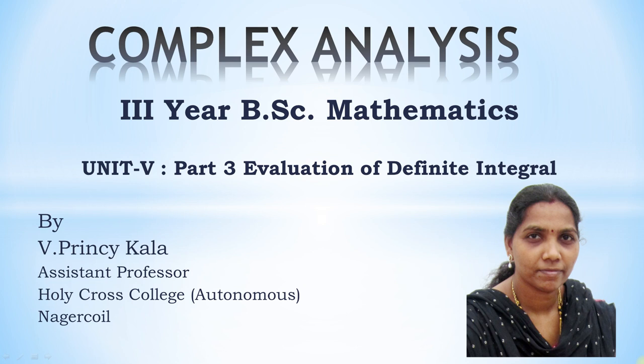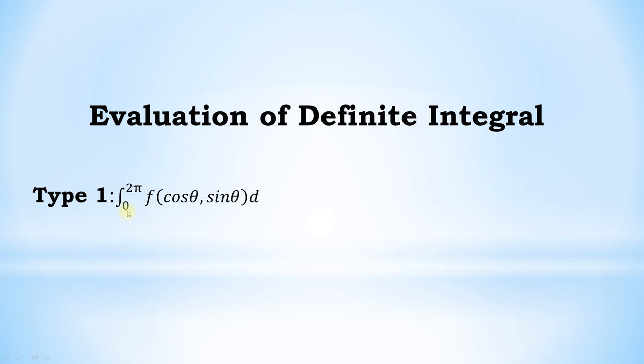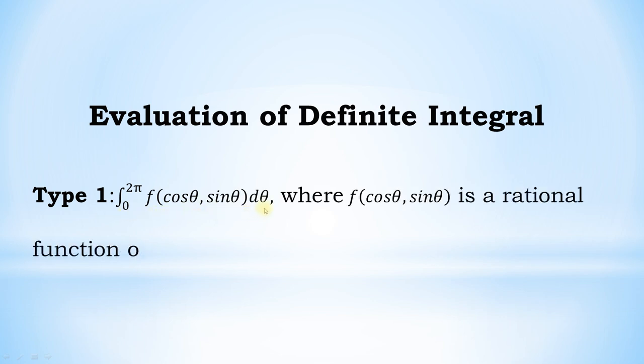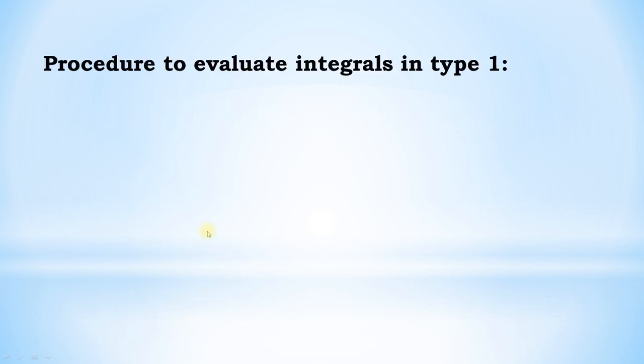In this video we are going to learn how to evaluate a definite integral. We have three types of problems. The first type is of the form: integral over 0 to 2π of f(cos θ, sin θ) dθ, where f(cos θ, sin θ) is a rational function of cos θ and sin θ. The procedure to evaluate integrals of this type is as follows.